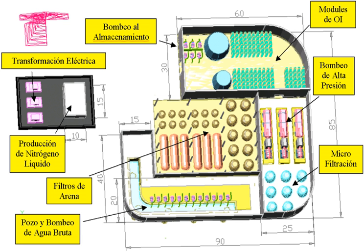Freeze-thaw desalination uses freezing to remove fresh water from salt water. Salt water is sprayed during freezing conditions into a pad where an ice pile builds up. When seasonal conditions warm, naturally desalinated melt water is recovered. This technique relies on extended periods of natural sub-freezing conditions. A different freeze-thaw method, not weather dependent and invented by Alexander Zarchin, freezes seawater in a vacuum. Under vacuum conditions the ice, desalinated, is melted and diverted for collection and the salt is collected.